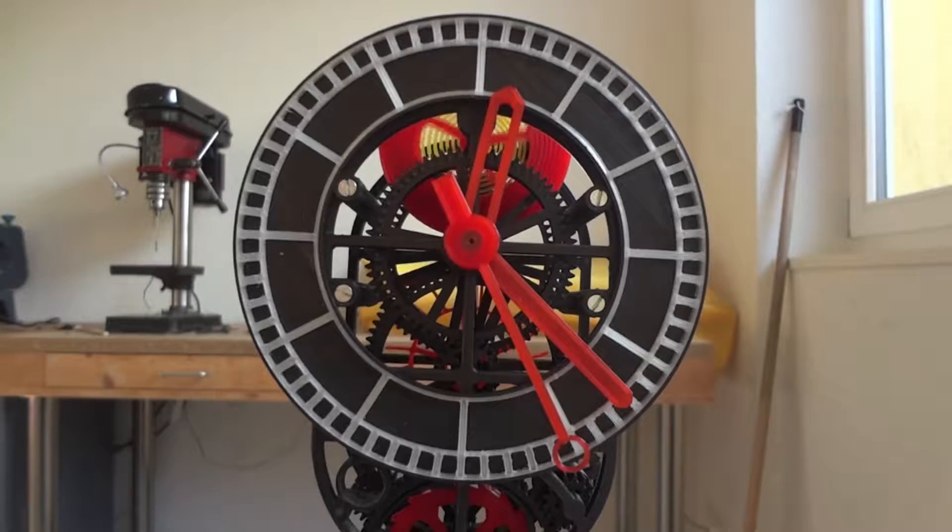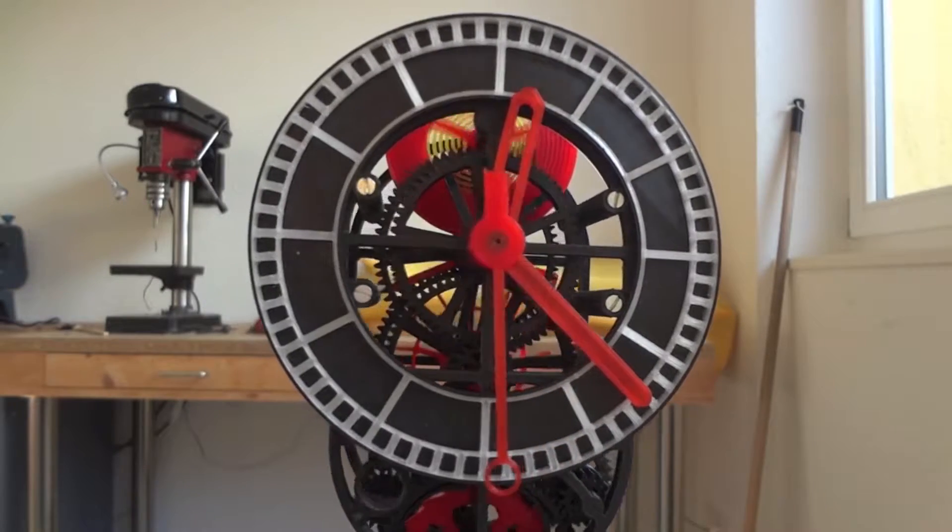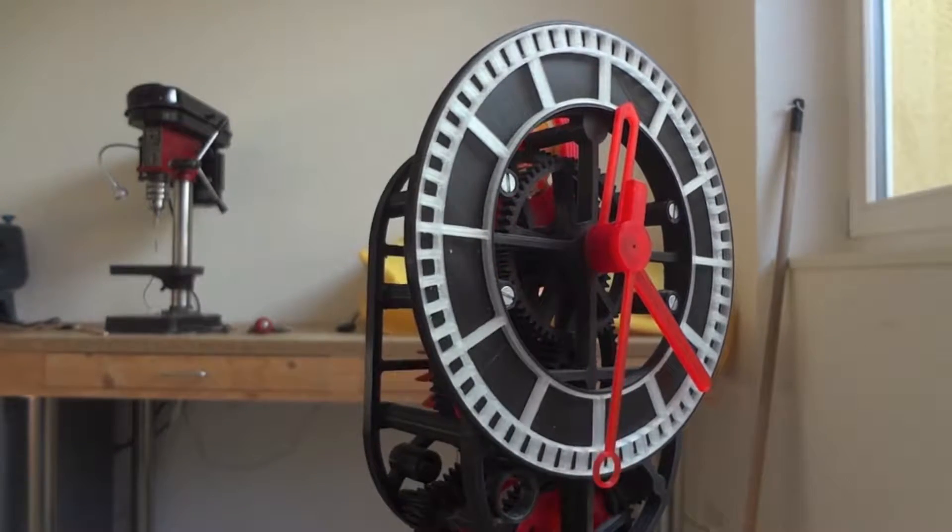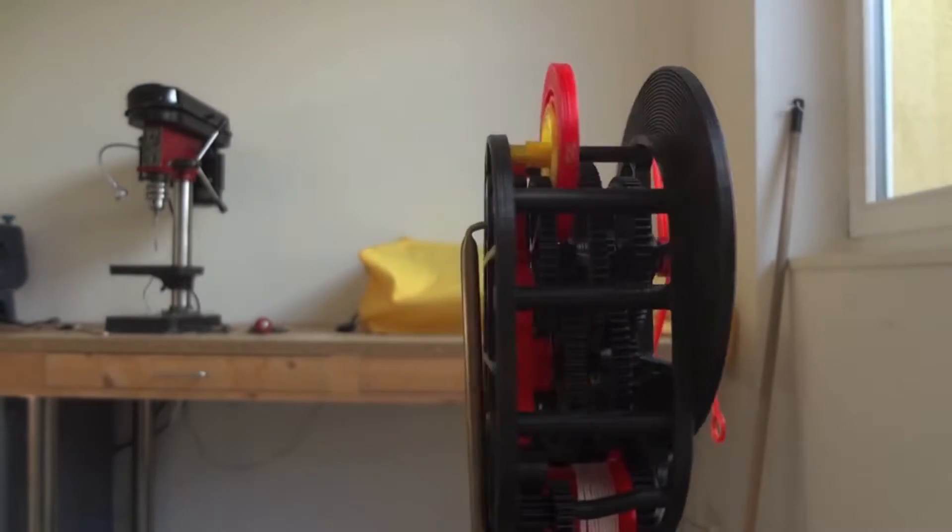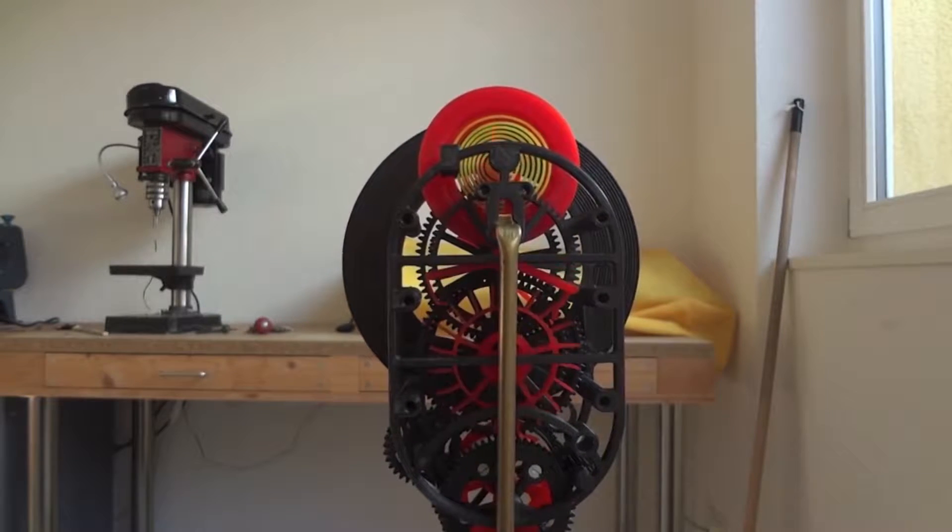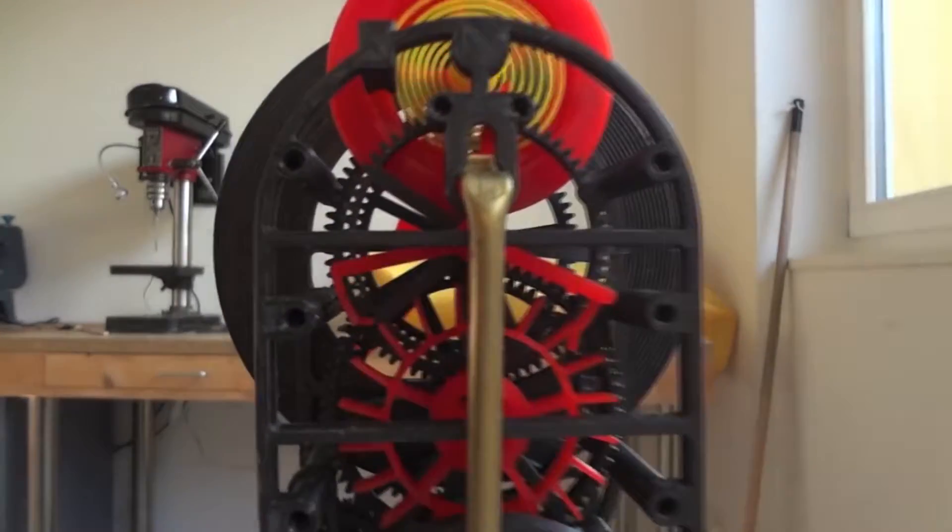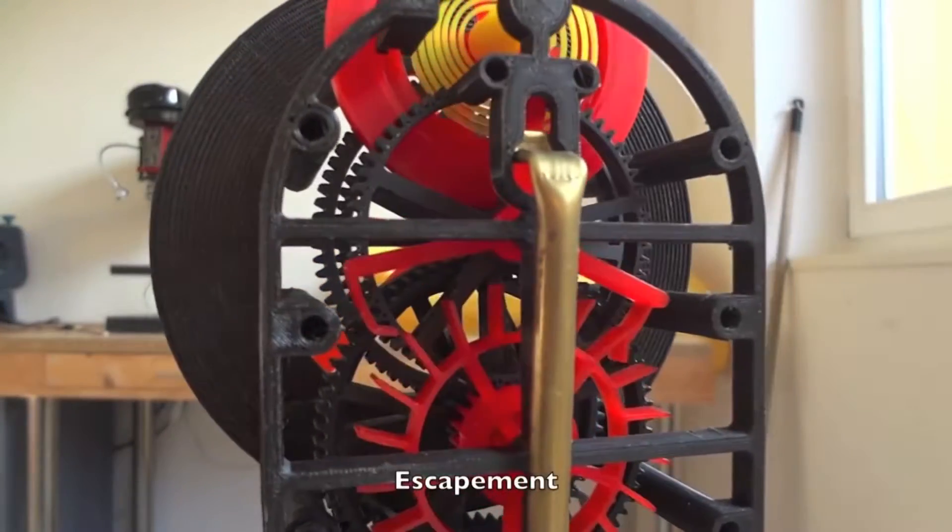This mechanical clock demonstrates that 3D printing is not just for decoration—it's possible to create intelligent, living things. The designer of this amazing clock explains everything has been printed using a 3D printer except for the axis, the screws, the cord, and the lead for the weight. This clock shows time in hours, minutes, and seconds.